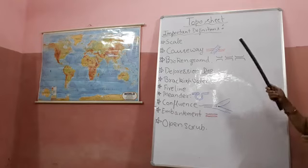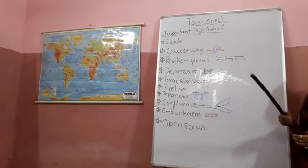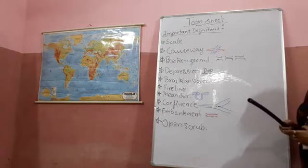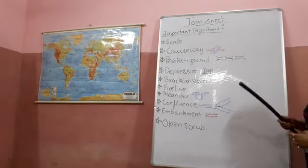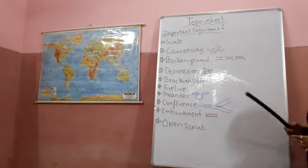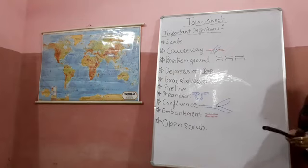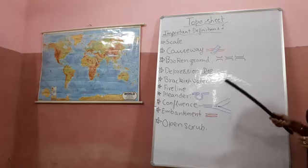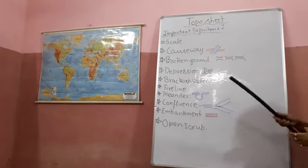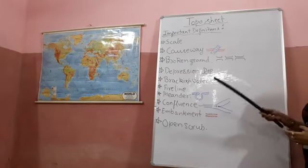First is scale — define scale. The answer will be: it is the proportion between the distance on the map and the corresponding distance on the ground or surface, expressed in the form of a fraction. There are three ways in which scales are indicated on a topographical map. The first type is by statement — for example, 2 cm is equal to 1 km.